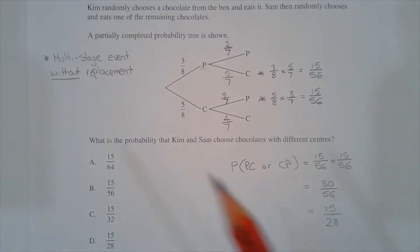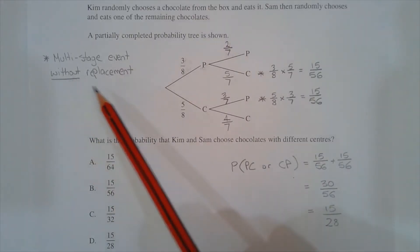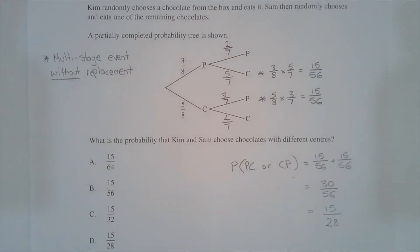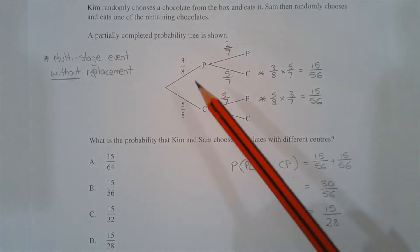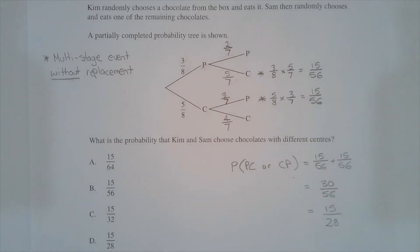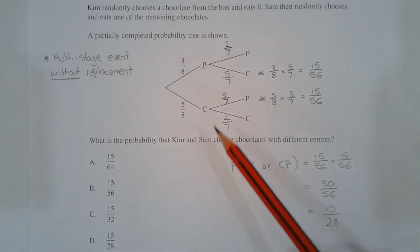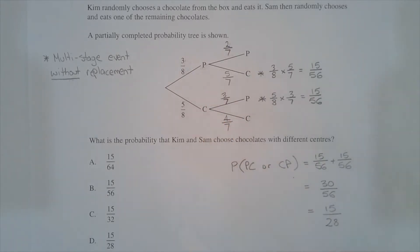This is a multi-stage event without replacement. In the first stage there are eight chocolates to choose from: three of which are peppermint, five of which are caramel. So the probability of choosing peppermint is three out of eight, and the probability of choosing caramel is five out of eight.